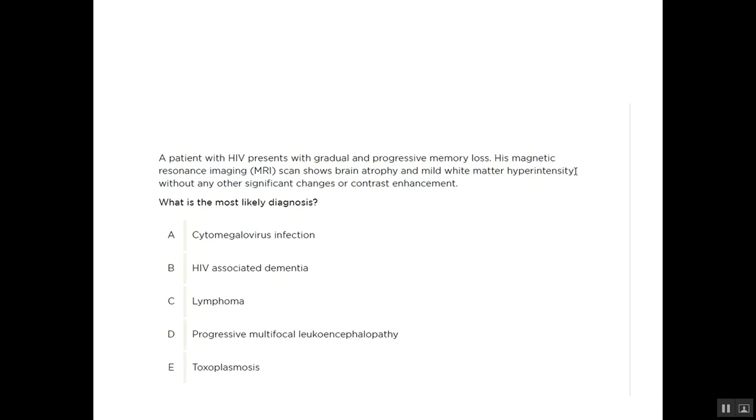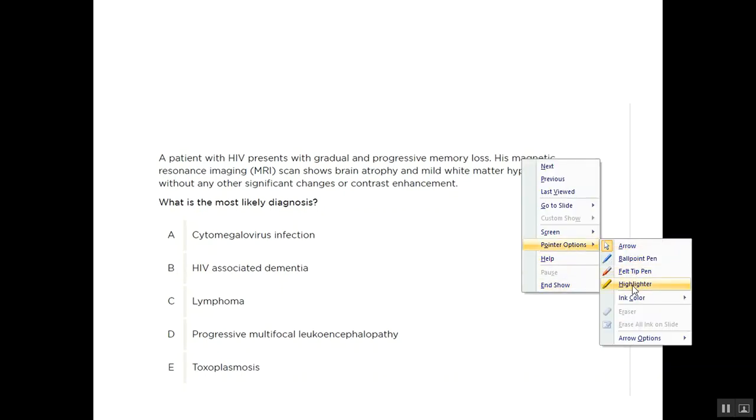Is it cytomegalovirus, HIV-associated dementia, lymphoma, progressive multifocal leukoencephalopathy, or toxoplasma? What is our important thing here?